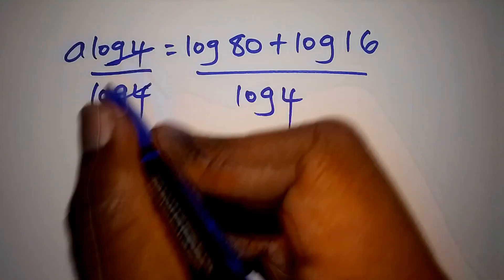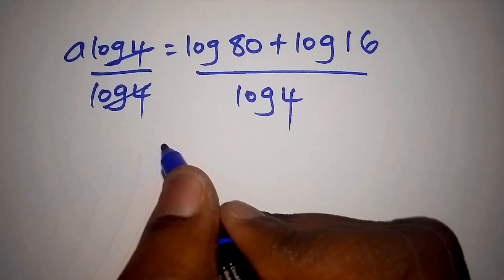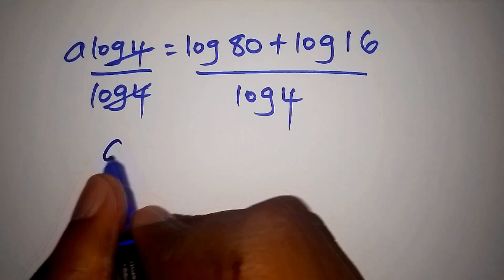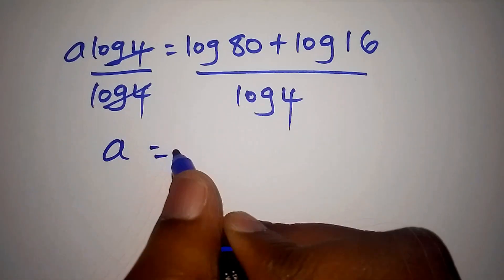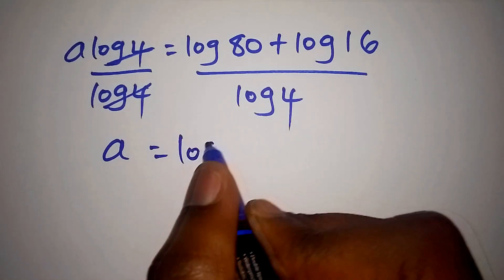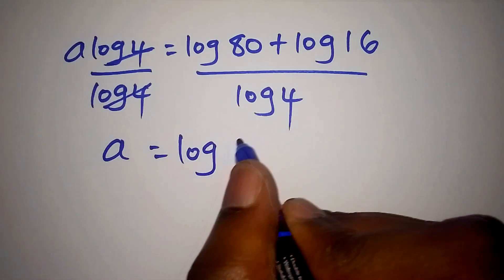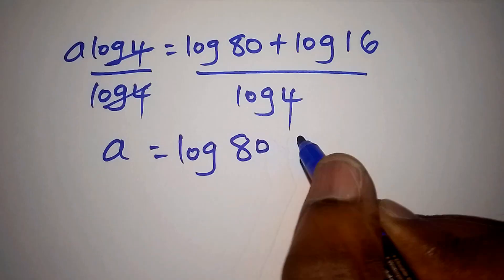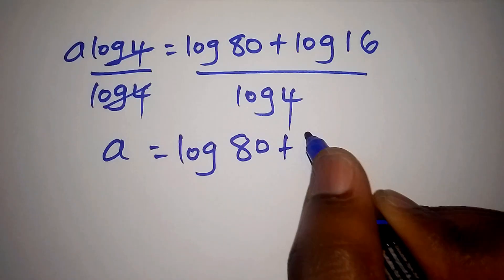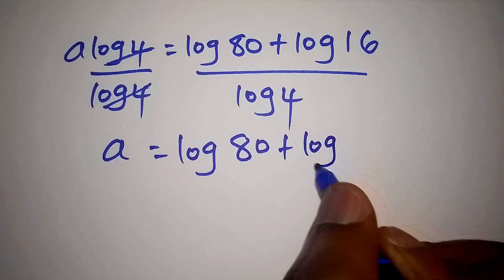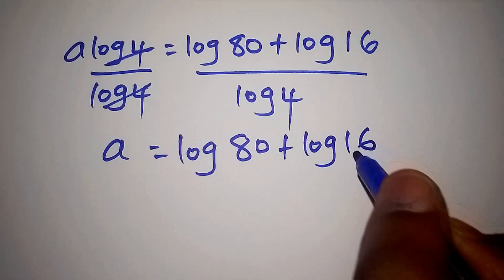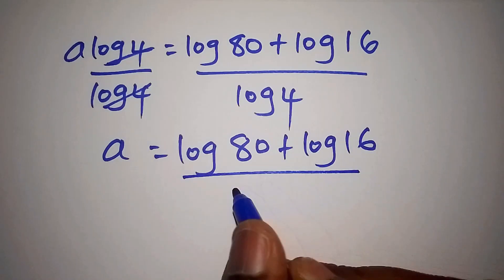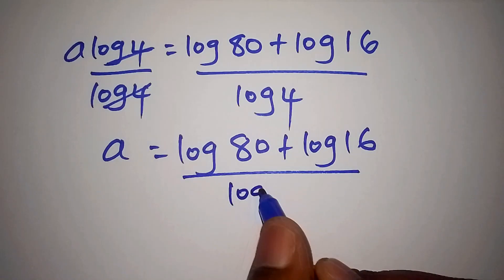Log 4 and log 4 cancel out. So the value for a equals the log of 80 plus the log of 16, all over the log of 4.